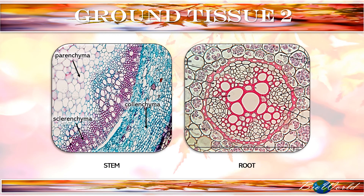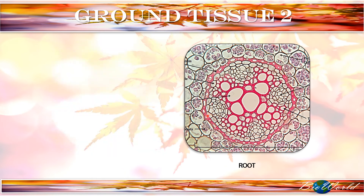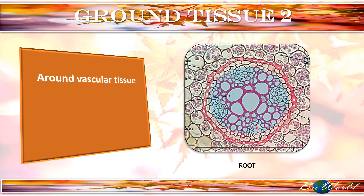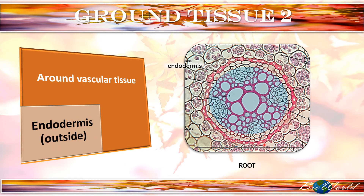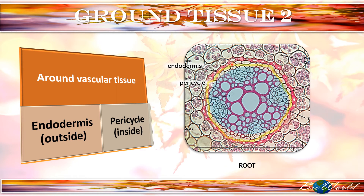Now we have concluded the structure, function as well as distribution of three ground tissues: parenchyma, collenchyma and sclerenchyma. Let's move on to the last two ground tissues. These two ground tissues are located around the vascular bundle. The one on the outside is known as the endodermis — that is the pink circle — and on the inside is the pericycle, labeled in yellow here.